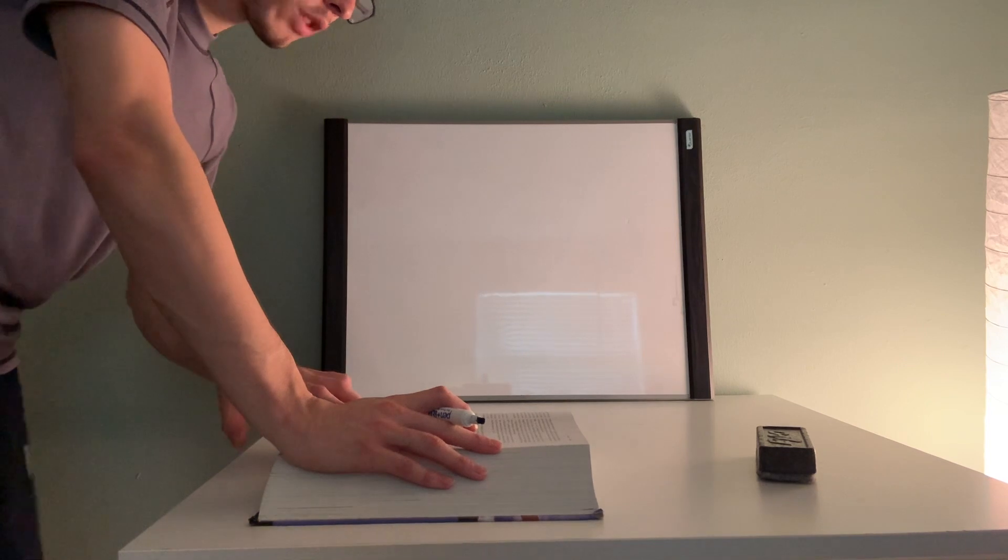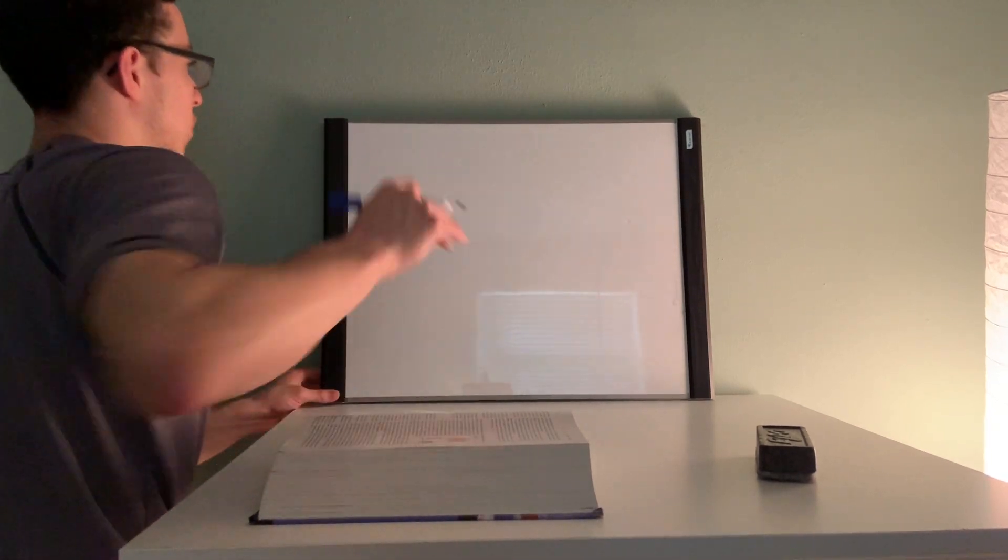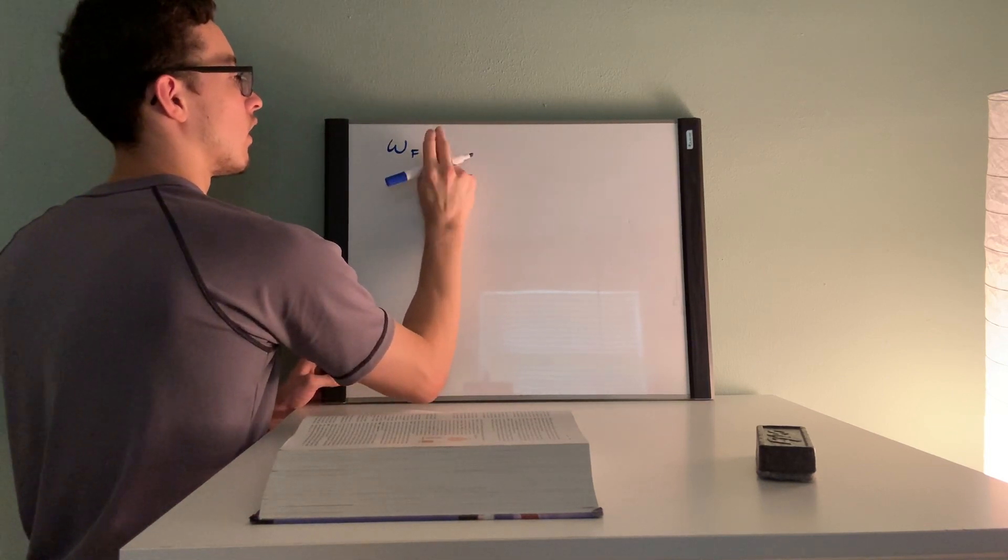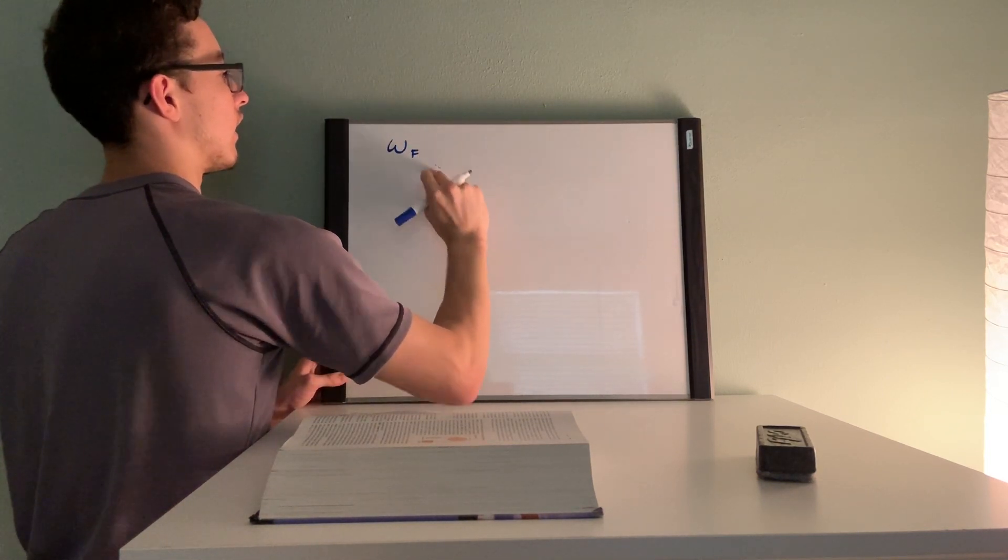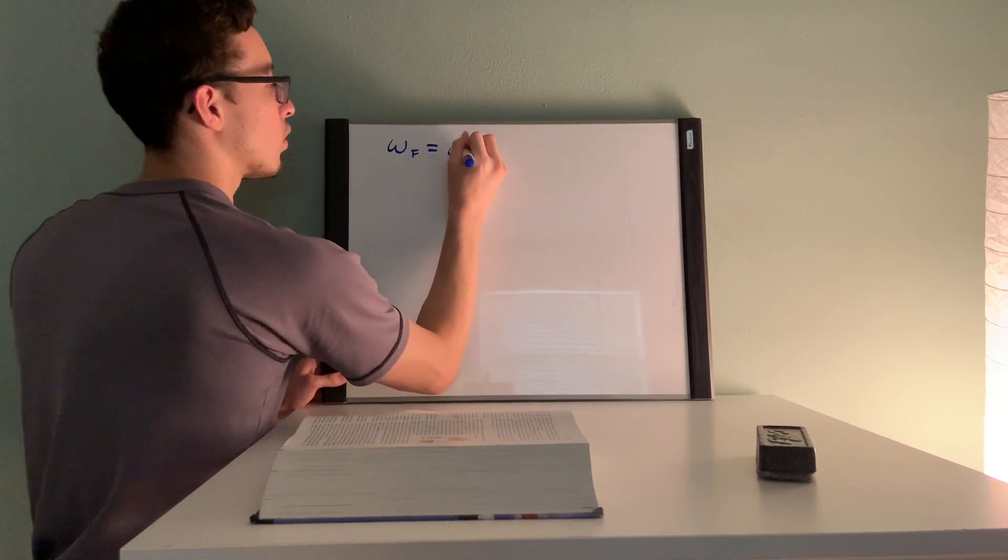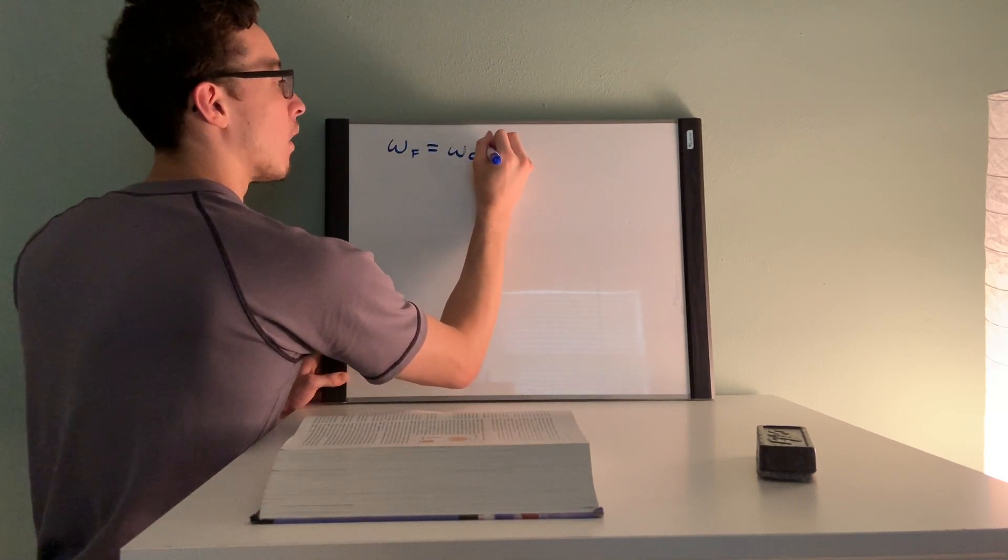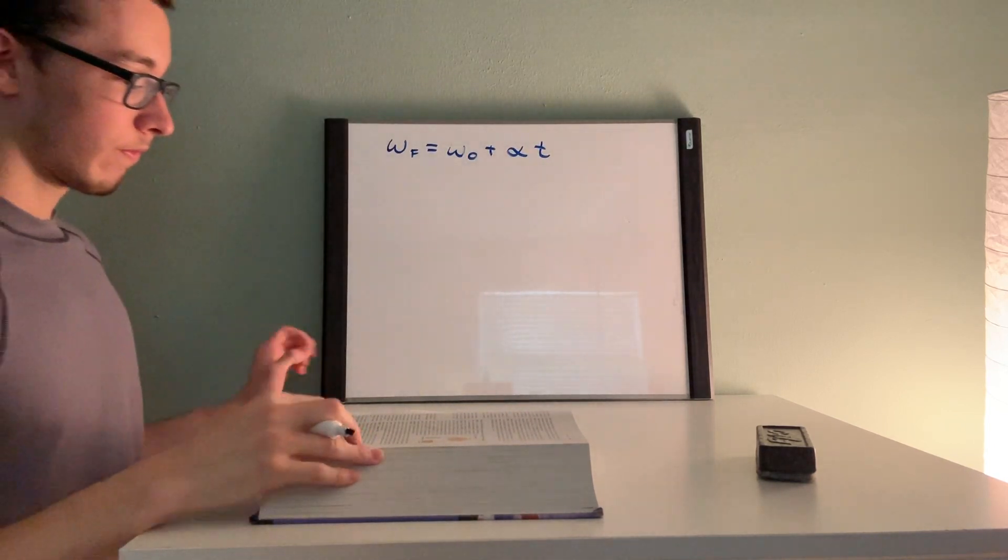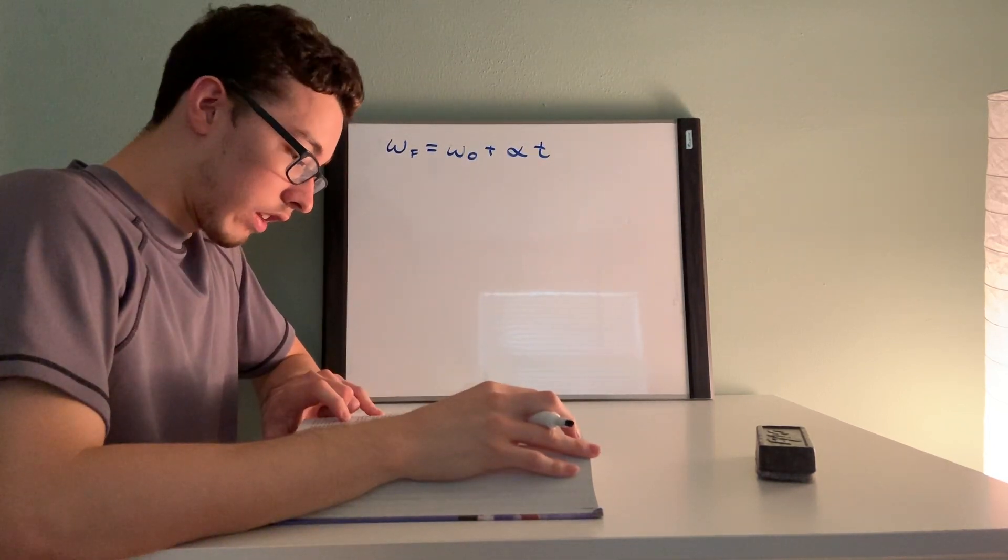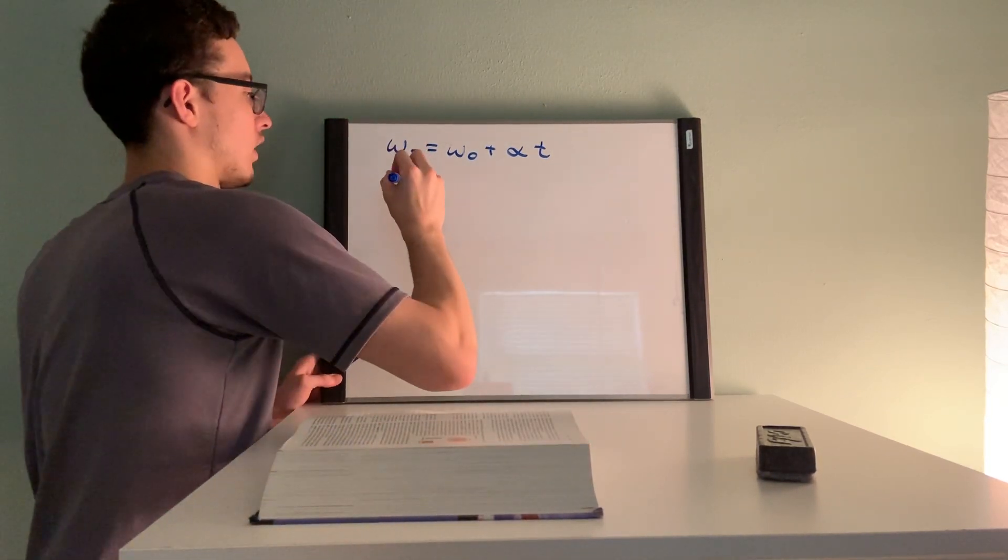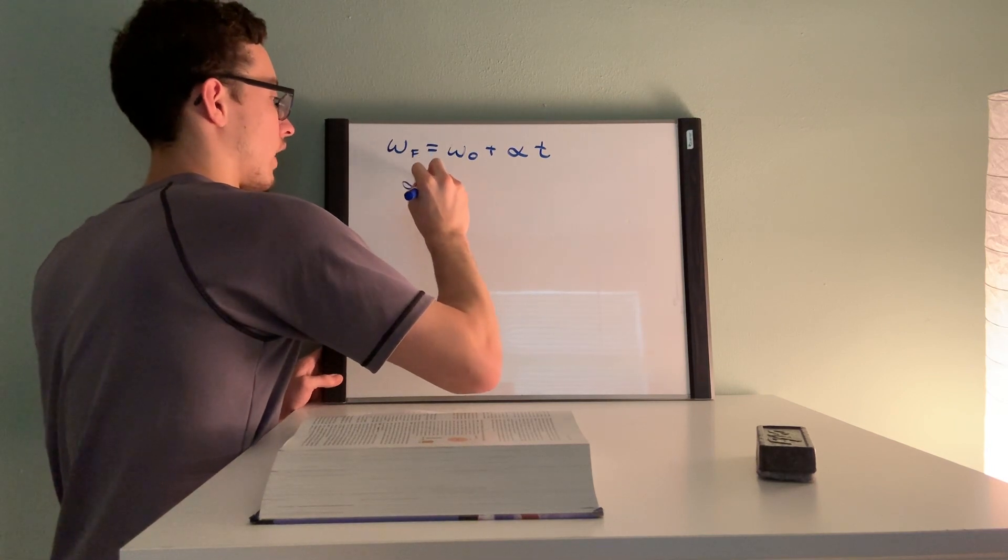In part a of this problem we will be using this one right here. So it's final angular velocity is equal to initial angular velocity plus acceleration times time. They also give us the value of that acceleration to be 1.5 radians per second squared, so write that down.